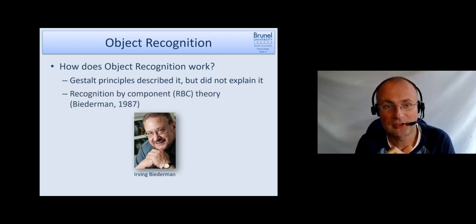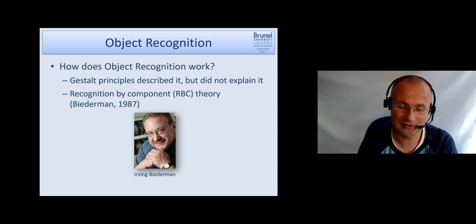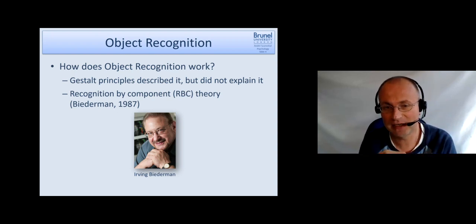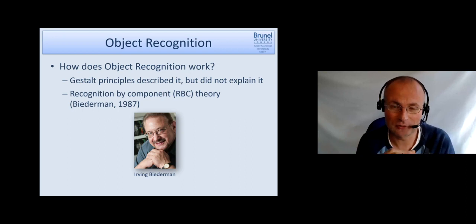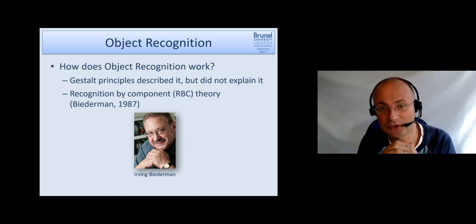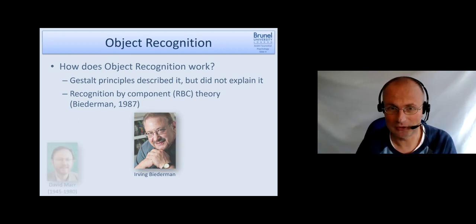Biedermann proposed a theory which is called the recognition by component or short RBC theory and I think you will hear about this in biological psychology as well. We here mainly focus on the cognitive aspects of that theory and actually the paper by Biedermann where he proposed that theory is today's additional reading which you might want to look into.